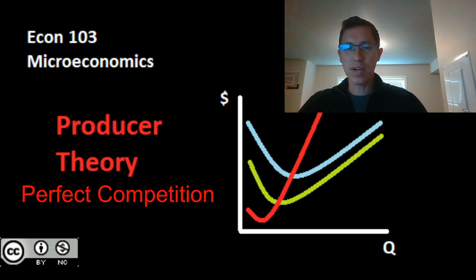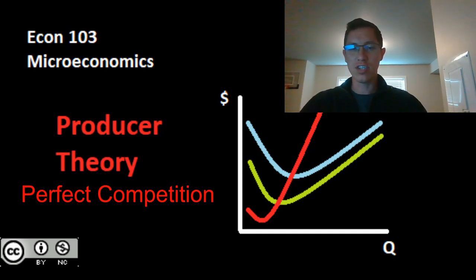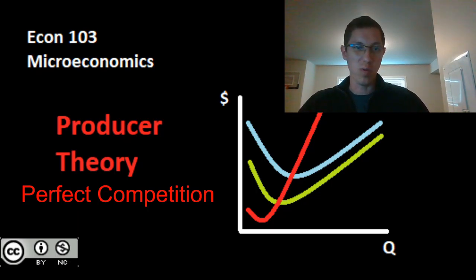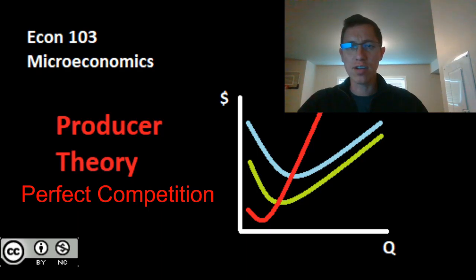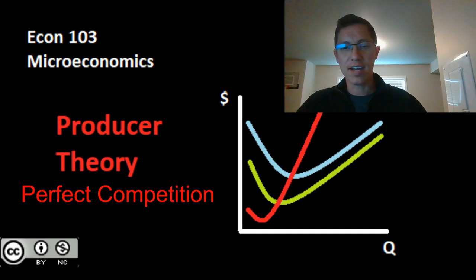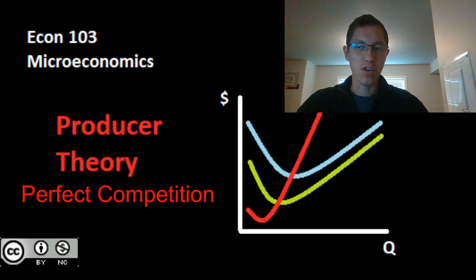This market supply curve will be the first half of our conversation. The second half, in the coming weeks, will flip to talk about consumers — instead of market supply, we'll be taking a look at market demand. But today we're looking at perfect competition, and in this video we'll go further into how much quantity our perfectly competitive firm will supply to the market, and how we determine that market supply curve as a result.